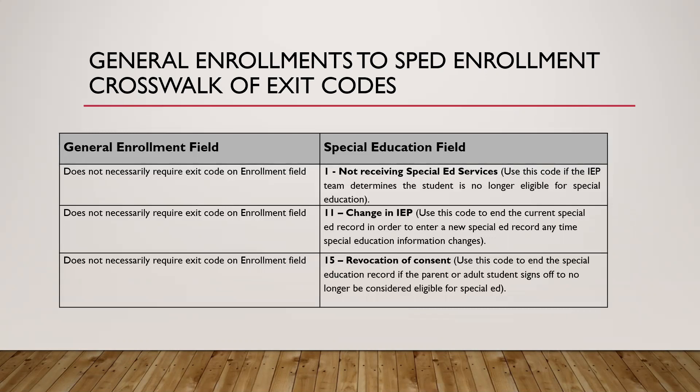There are a couple of special ed codes that don't have corresponding general enrollment codes. Code 1 (not receiving special ed services) — the student is still in school receiving general education, just not special ed services. Code 11 (change in IEP) — the student is still enrolled but there was a change in placement or disability category, so you create a new record in the special ed field. Code 15 (revocation of consent) — the student is still in school, so there would be no end code for the general enrollment field.